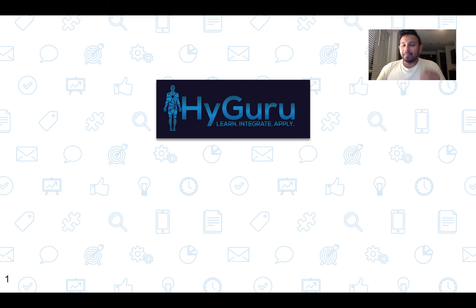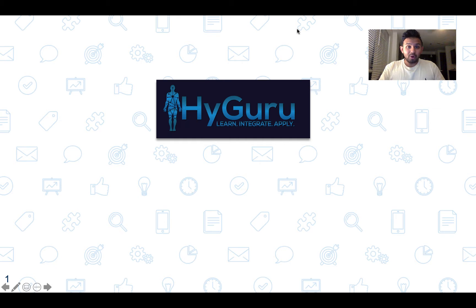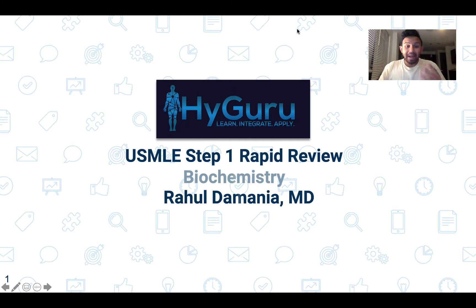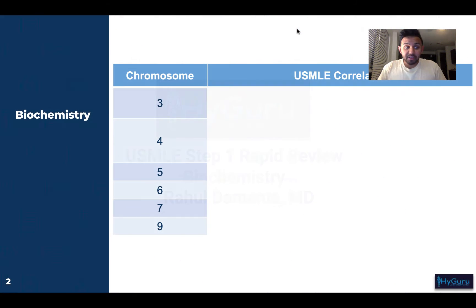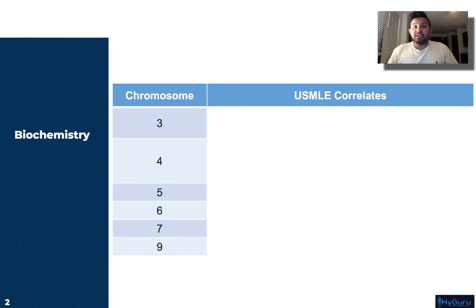Hello, thanks for tuning in. If you're new, my name is Rahul Domania. I absolutely love teaching for the USMLE Step 1 exam. This is a brief snippet of my upcoming rapid review course. Today we're going to be covering biochemistry, specifically the various chromosomes you need to know for your USMLE exam. We're going to go in numerical order, and I want you to burn into your mind the clinical correlates and how they are going to test them.